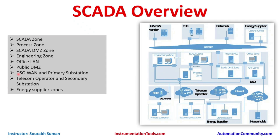This is the high-level map where we can see several zones. The zones present are: SCADA zone, process zone, SCADA DMZ zone, engineering zone, office LAN, public DMZ, DSO WAN, primary substation, TEDICOM operator, secondary substation, and energy supplier zone.